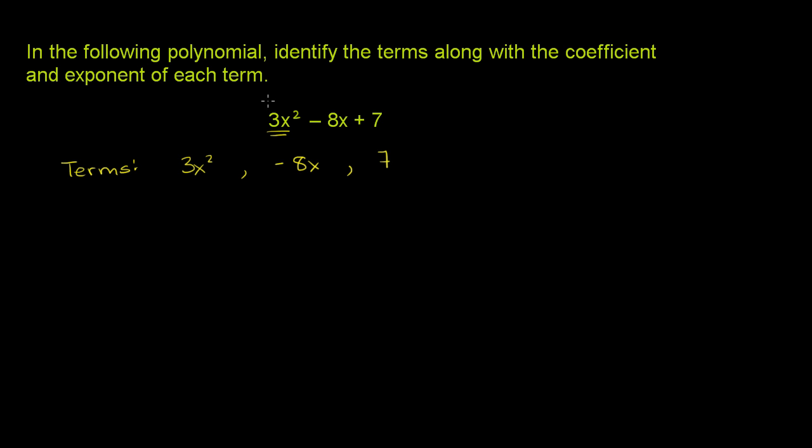It's called a polynomial. Poly, it has many terms. Or you could view each term as a monomial, as a polynomial with only one term in it. So those are the terms.